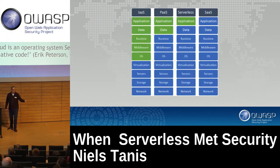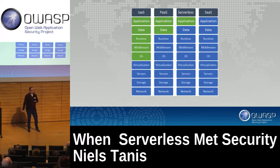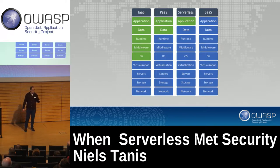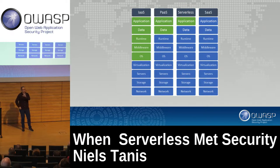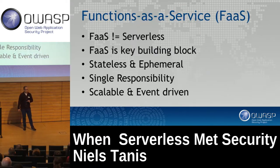Looking at a responsibility matrix — green is what you need to do yourself, blue is done by the cloud provider. Once you move from infrastructure as a service to platform as a service, serverless is only dealing with the application itself. With serverless, you only worry about the application; there's no need to worry about infrastructure.